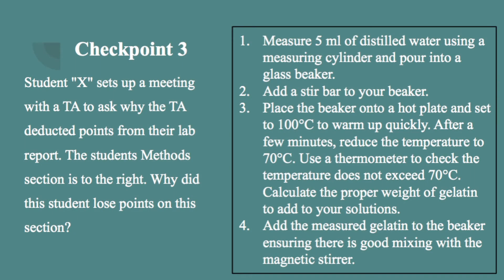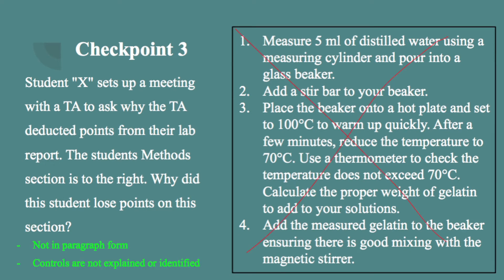Checkpoint Question 3. Student X sets up a meeting with their TA because they were unhappy with the score they received for the methods section of their formal lab report. The TA asks to see what the student submitted, and the student presents what they wrote for the methods section. What do you see wrong with the section? Among many problems with this student's methods section, I hope you noticed that this methods section is written in a list format. Your methods section should always be written in paragraph form to earn full credit. Secondly, this student did not describe what their controls were or why the controls for the experiment were important.